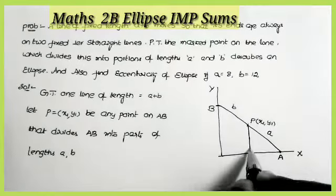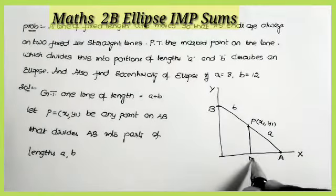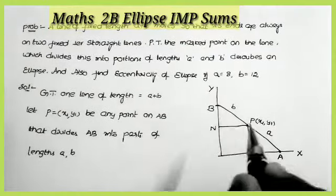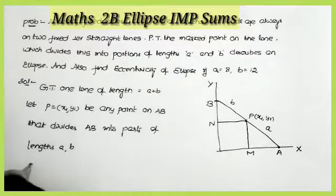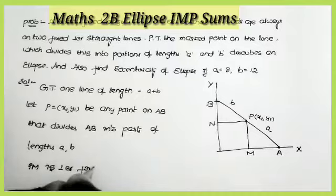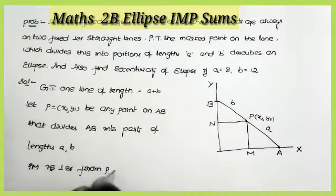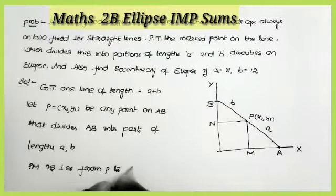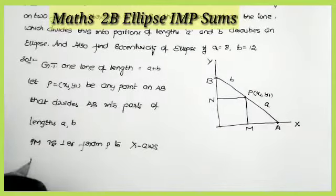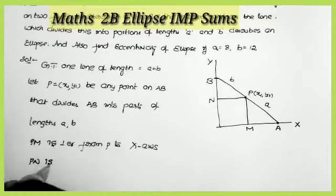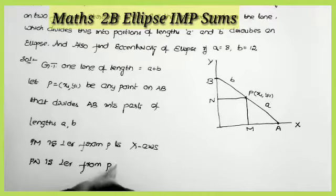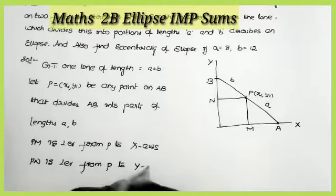I am drawing one perpendicular from P to the x-axis — this is M. And again I am drawing one perpendicular from P to the y-axis — this is N. So PM is perpendicular from P to the x-axis, and PN is perpendicular from P to the y-axis. From the point P, we are taking two perpendiculars to the x-axis and y-axis.